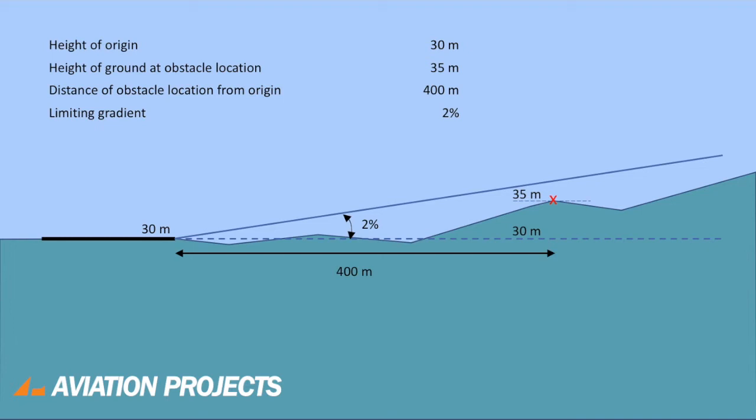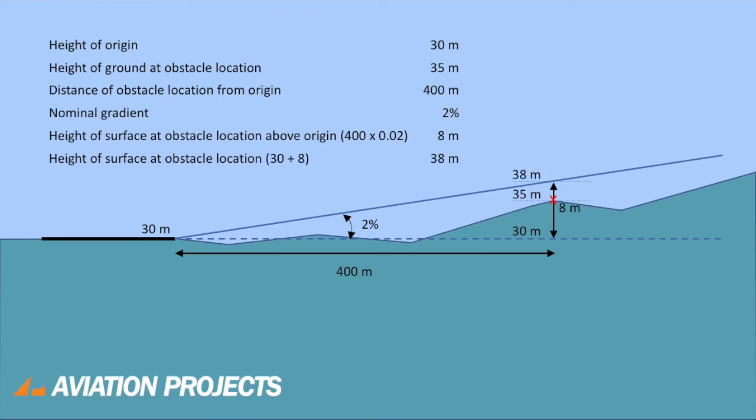At a distance of 400 metres, an obstacle can be 8 metres above the runway elevation without exceeding the 2% limit. Since the ground elevation is already 5 metres above the runway elevation, the obstacle can only be 3 metres high at this location.